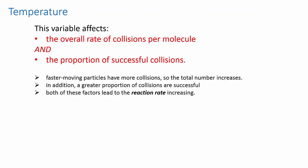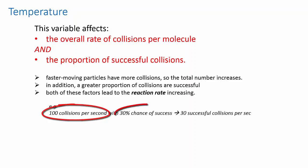So, as before, a simple set of numbers to help you visualize what's going on. Imagine that you would initially have 100 collisions per second with a 30% chance of success, giving you, on average, 30 successful collisions per second.